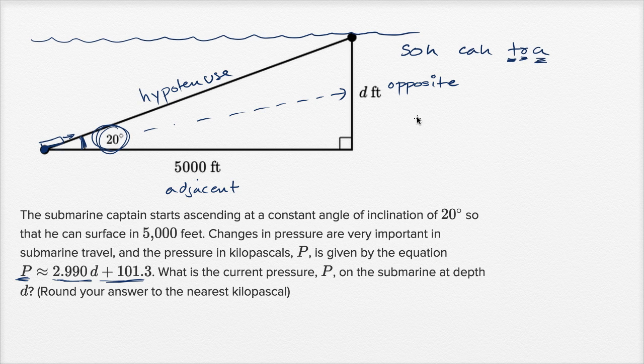Well tangent deals with the opposite and the adjacent. So we know that the tangent of 20 degrees is going to be equal to the ratio of the opposite side to the length of the adjacent side. So it's going to be d feet over 5,000 feet.